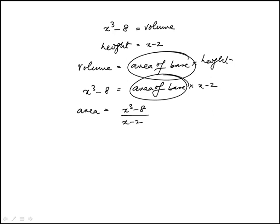So we just have to do this division using long division of polynomials. This would be x squared, which gives x cubed minus 2x squared. Then I subtract this, and it becomes 2x squared minus 8.